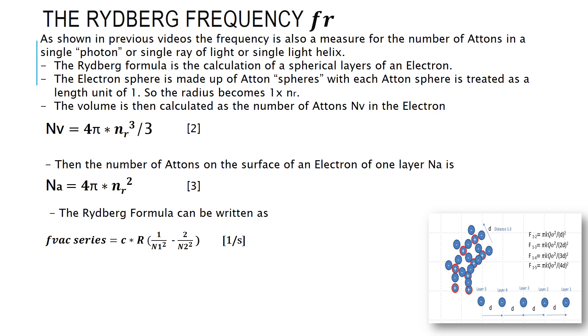And so, the radius becomes the number of atoms in series across the sphere of the electron. The radius is fundamentally just a number of atoms and it doesn't need a dimension.